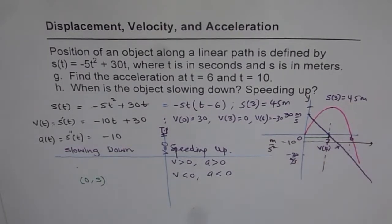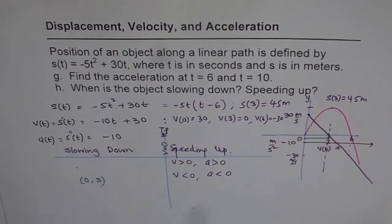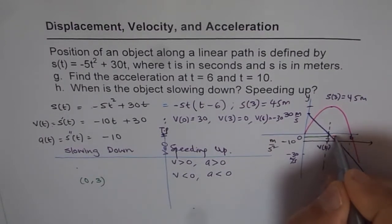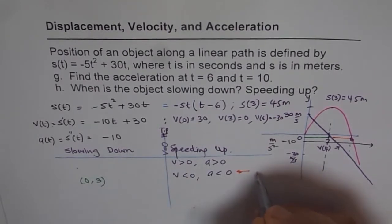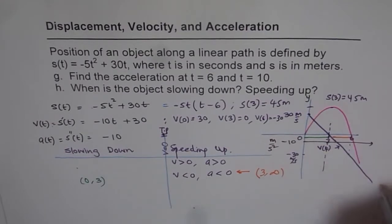But after three, what happens? After three is high alert area. Let me draw this with orange. After three, both are negative. Do you see? This is negative, this is negative. Both are negative after three, and we say this is speeding up. From three onwards, as it moves infinitely, we're speeding up.